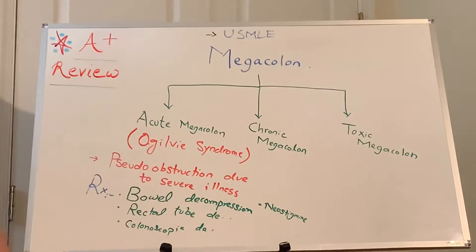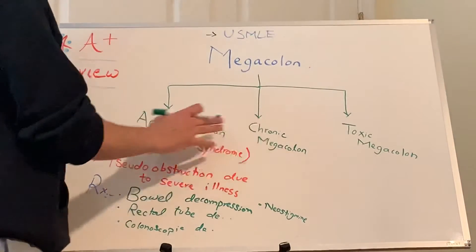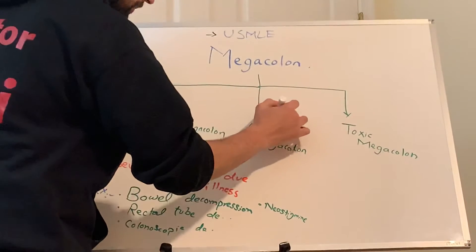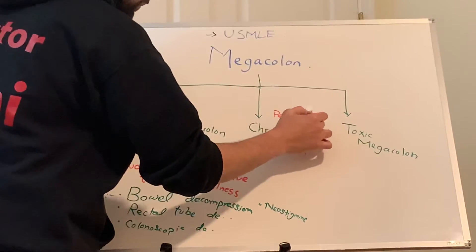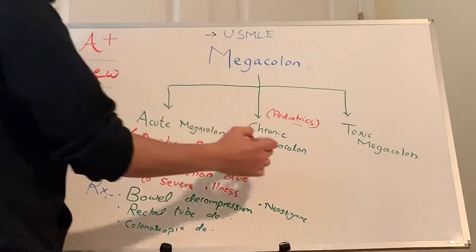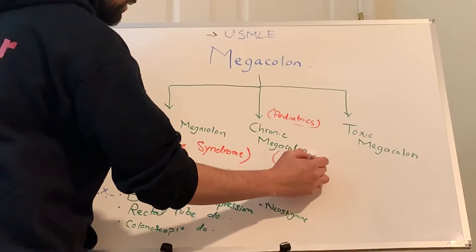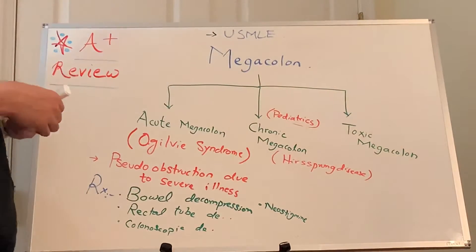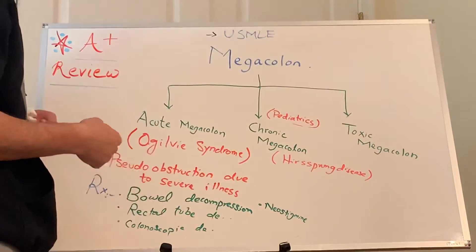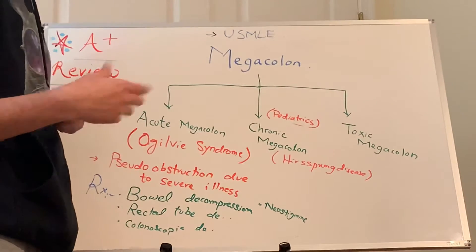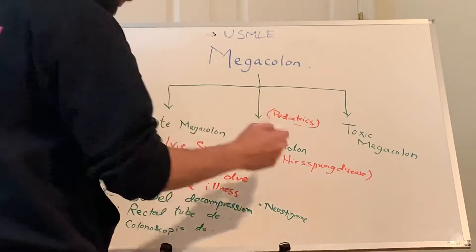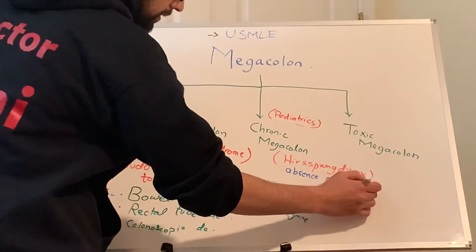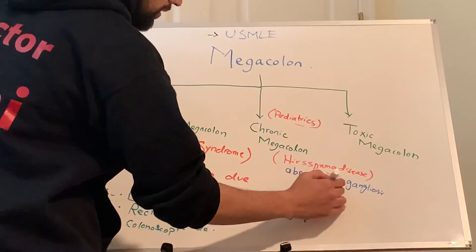Now let's talk about chronic megacolon. Chronic megacolon means we're talking about pediatrics. What condition comes to mind about chronic megacolon? Hirschsprung disease. The pathophysiology is a congenital abnormality — congenital aganglionic cells — meaning absence of ganglion cells in the distal colon.